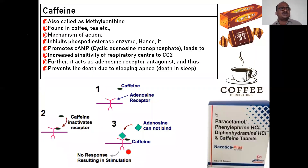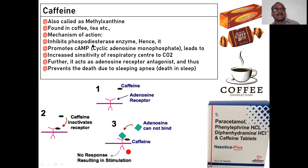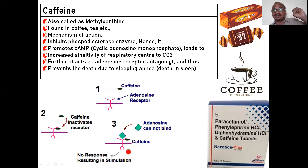Caffeine is also called methylxanthine. It is an alkaloid found in coffee and tea. The mechanism of action is that it inhibits the phosphodiesterase enzyme, leading to accumulation of cAMP — cyclic adenosine monophosphate. It leads to increased sensitivity of the respiratory center to carbon dioxide. So carbon dioxide gives the signal, and the sensitivity of your medulla respiratory center is increased. That is a wonderful mechanism.